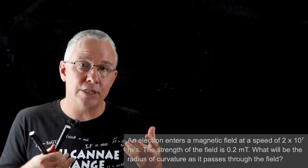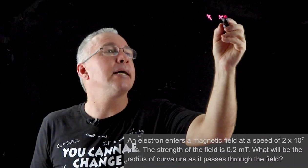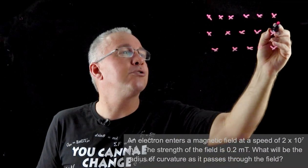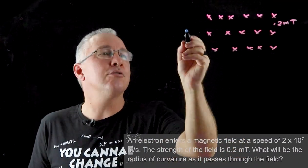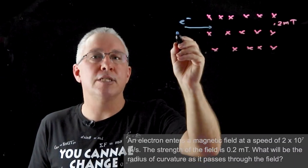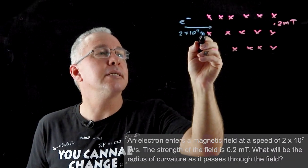To help us understand that question, it's always good to draw a diagram. So let's first start off with our magnetic field - we're given a value of 0.2 millitesla. We know we have a charge moving into that field, it is an electron, and we know it's moving at a velocity of 2×10⁷ meters per second.